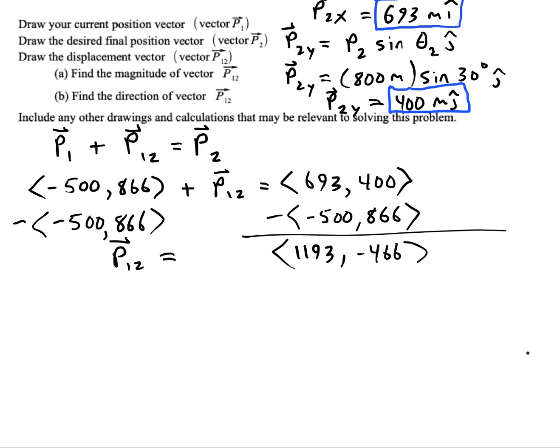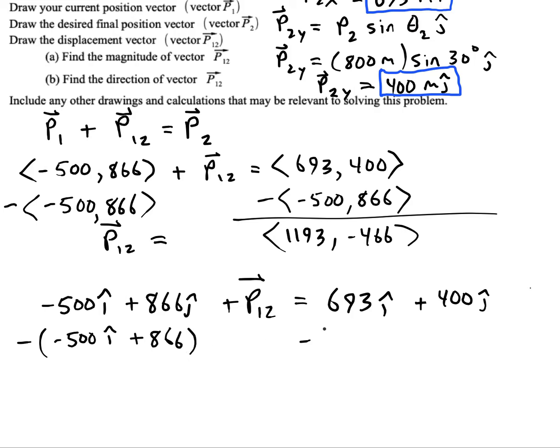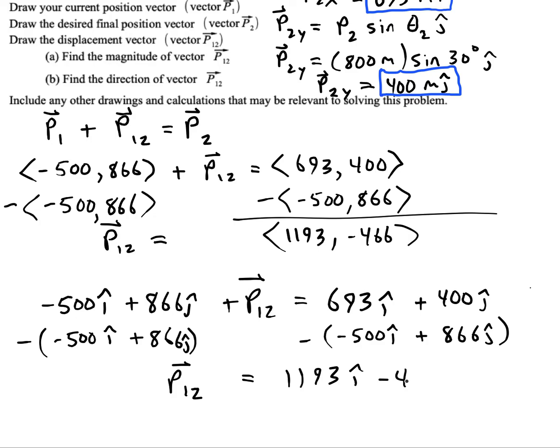Now, how could I have written that in vector form? I would have just done negative 500 i plus 866 j plus P12 equals 693 i plus 400 j. So see they're kept separate by the fact that they're attached to different letters. Then you would just get rid of this by subtracting. As you can see it's just the same process with a different notation. So you get P12 equals 1193 i minus 466 j.